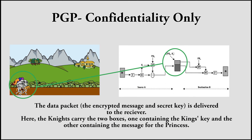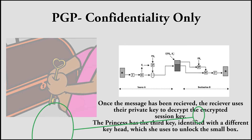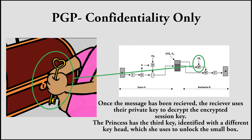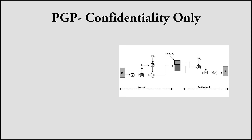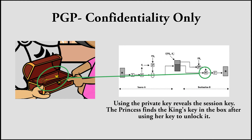The data packet for the encrypted message and the secret key is delivered to the receiver. Here, the knights carry the two boxes — one containing the king's key and the other containing the message for the princess. Once the message has been received, the receiver uses their private key to decrypt the encrypted session key. The princess has a third key, identified with a different key head, which she uses to unlock the small box. Using the private key reveals the session key — the princess finds the king's key in the box after using her key to unlock it.